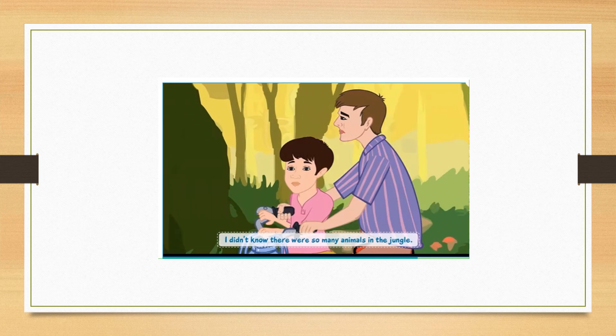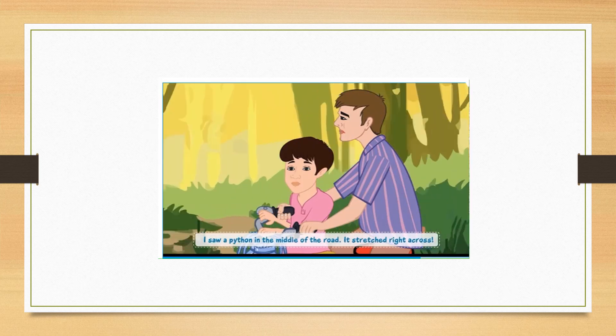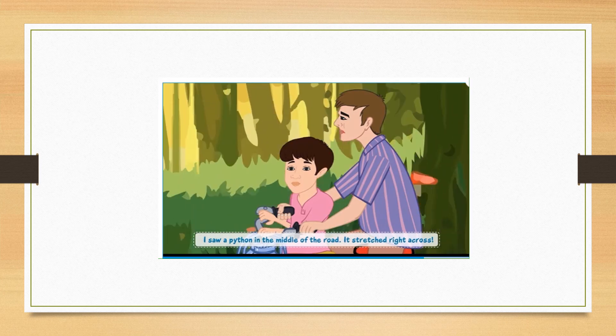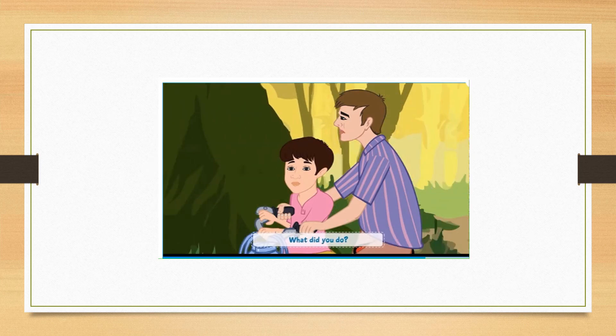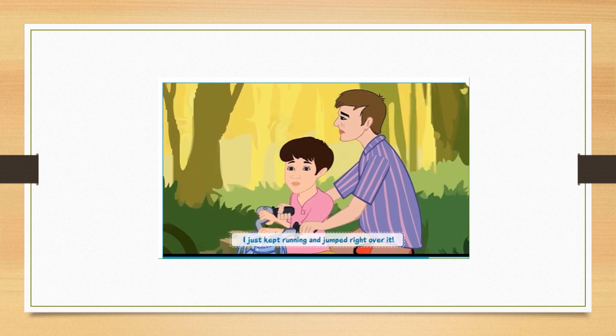Teju, I didn't know there were so many animals in the jungle. I saw a python in the middle of the road. It stretched right across. Romy, what did you do? Teju, I just kept running and jumped right over it.